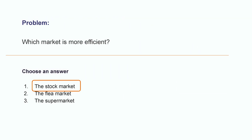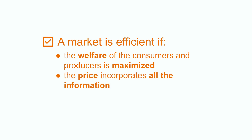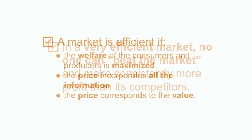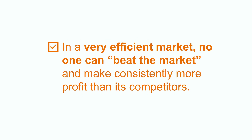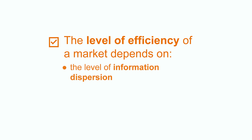Answer: the stock market. A quick recap. We have seen during this class that a market is efficient if: the welfare of consumers and producers is maximized; if the price incorporates all the information; and if the price corresponds to the value of the product. In a very efficient market, no one can beat the market and make consistently more profit than its competitors. The level of efficiency of a market depends on the level of information dispersion and the level of concentration of the market structure.